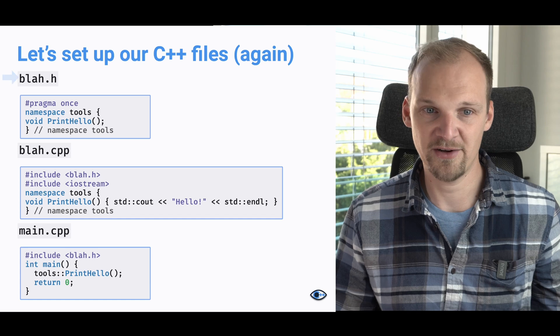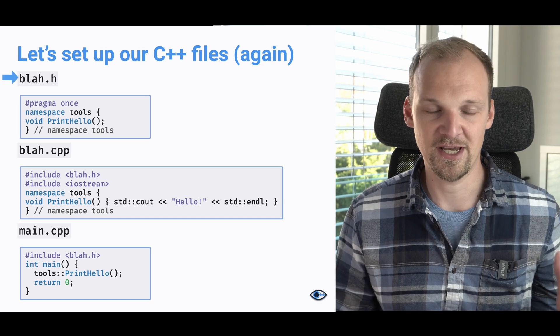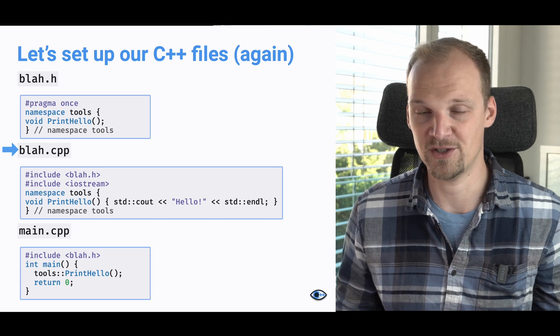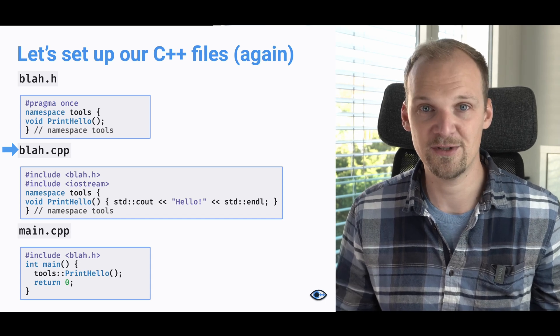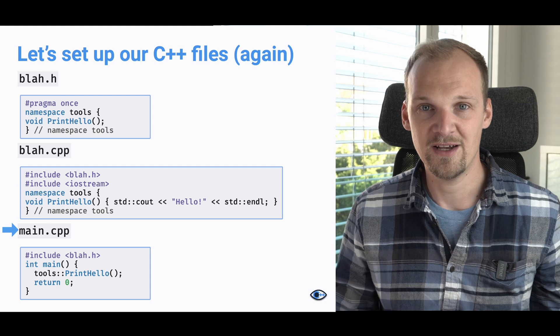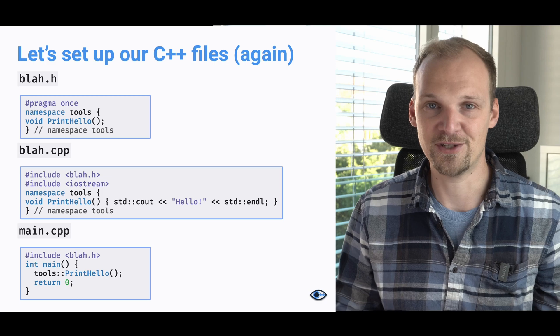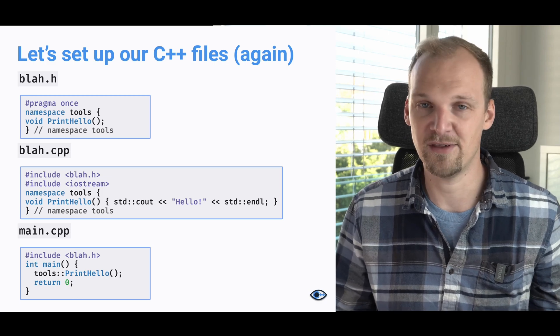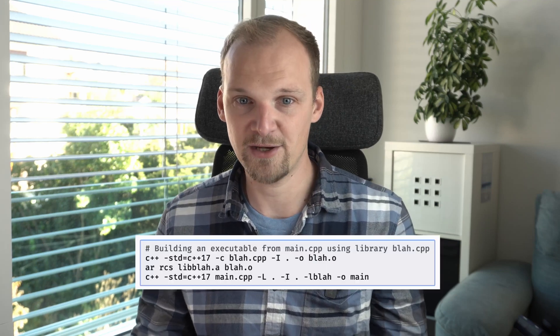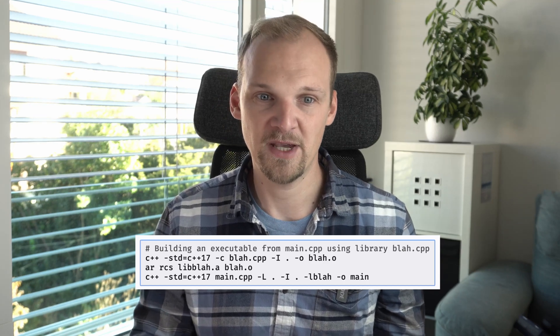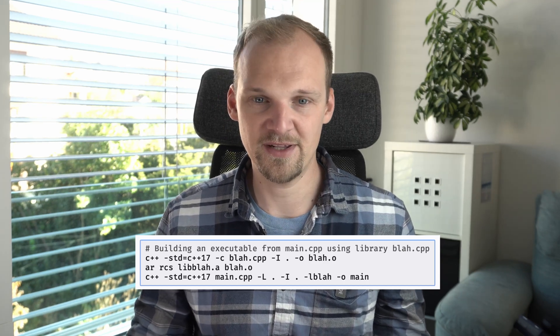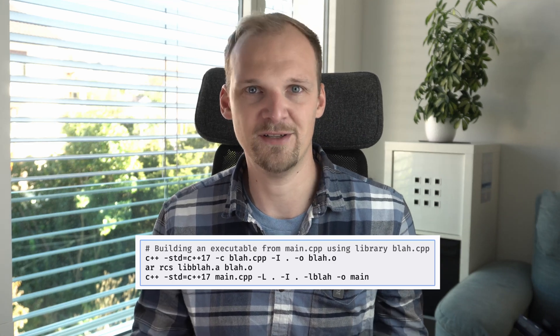For that we will set up some C++ files. We're going to have a header with some function declaration, a CPP file where we're going to have the function definition, and finally we're going to use this function in the main CPP to print a hello string to the terminal. Nothing new and nothing fancy here. If you remember the last lecture, you already know you can compile this manually. The problem is that we have to write many commands in the right order, and if we mess up this order, nothing will compile or it will compile wrongly.